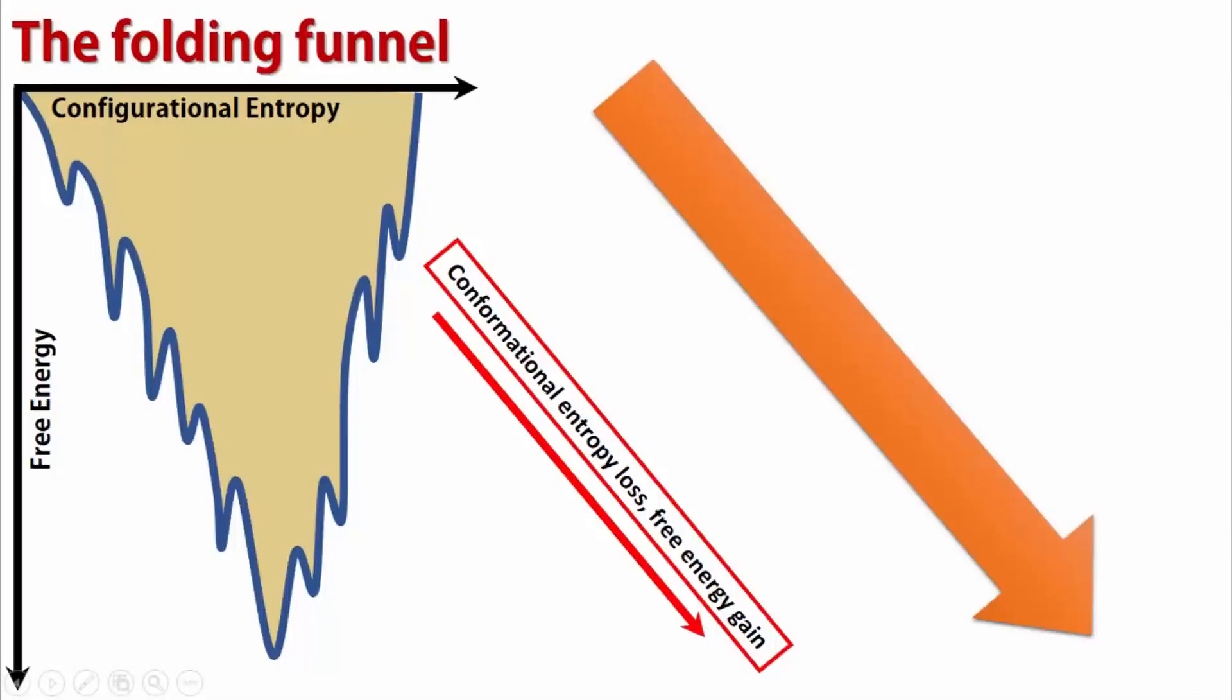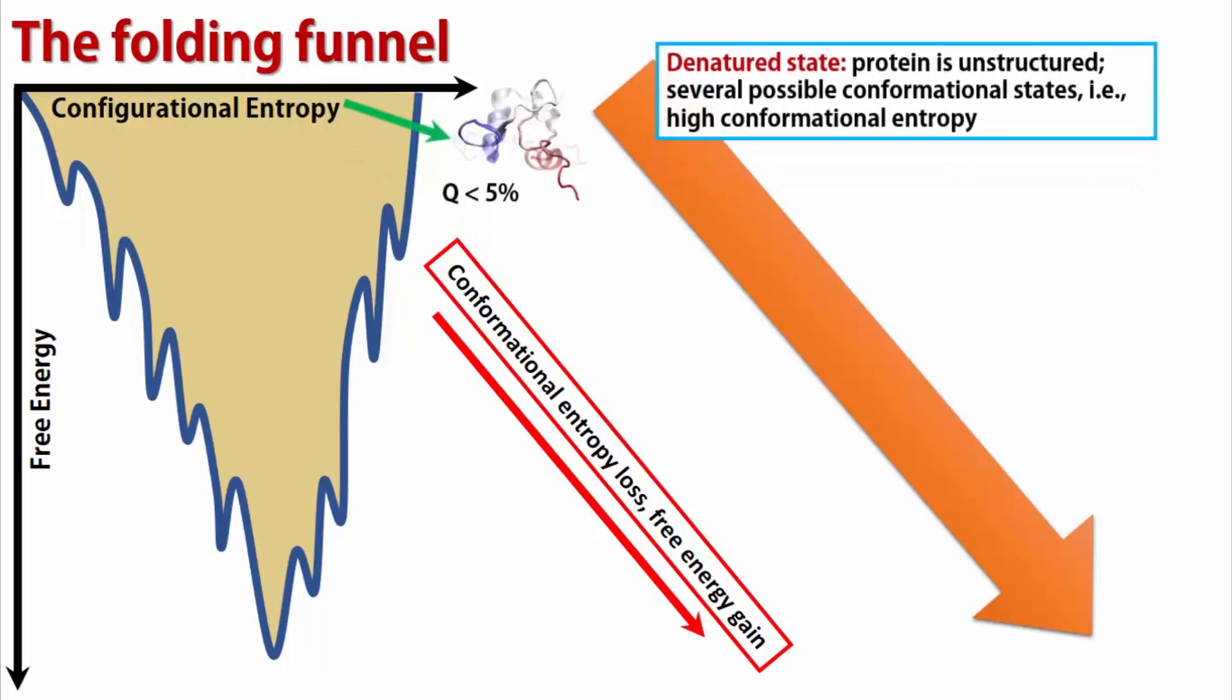A polypeptide chain loses its conformational entropy and gets higher stability as it progresses downwards the folding funnel. Stability gain we have discussed. Now, what is conformational entropy loss? Well, see this. Right after synthesis, a polypeptide chain remains in a denatured state.